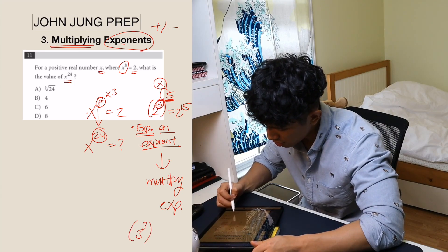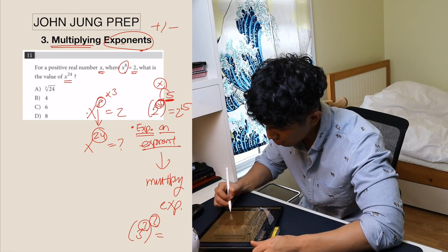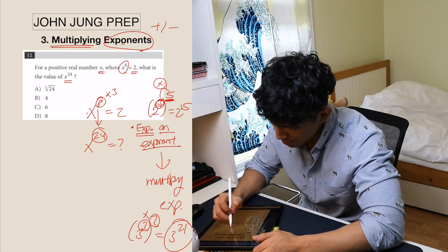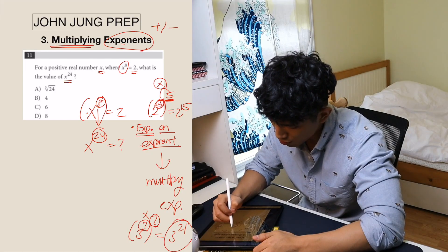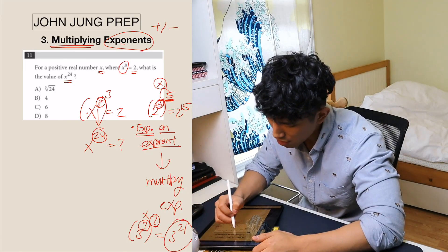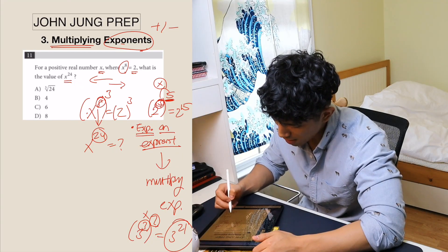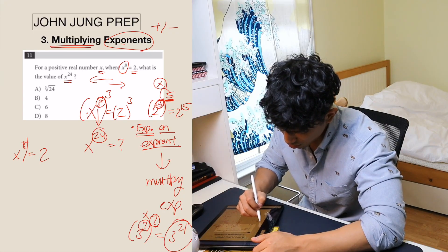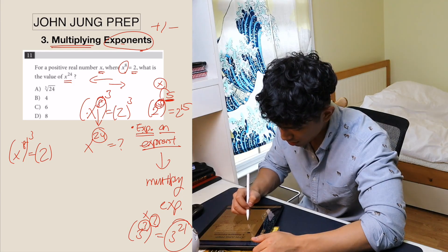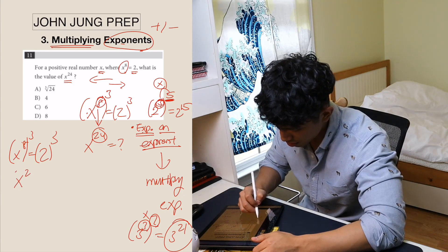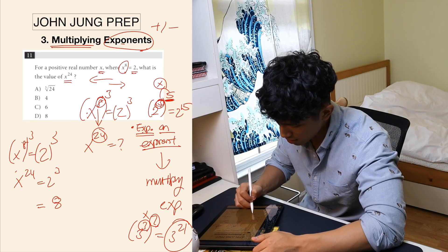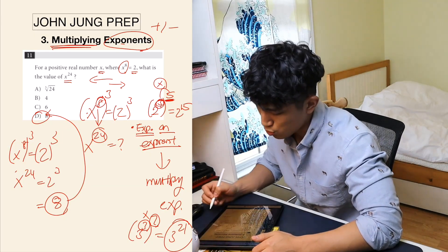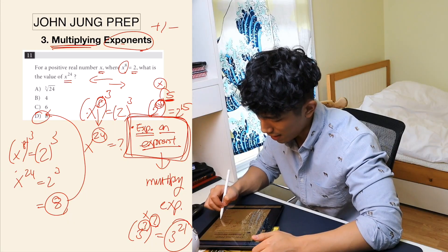The question says: for a positive real number x where x^8 = 2, what's the value of x^24? We see 8 and 24, and 8 × 3 = 24 — that's no coincidence, that's exactly what the SAT wants you to do. We raise both sides to the third power: (x^8)^3 = 2^3, giving us x^24 = 8. Our answer is D.